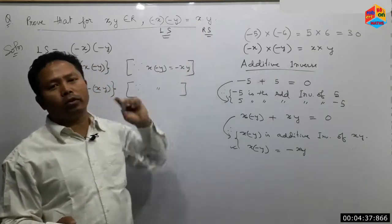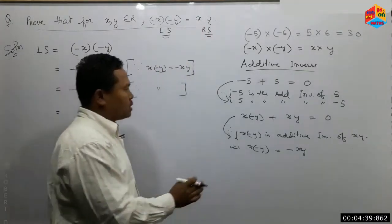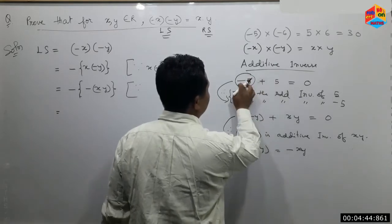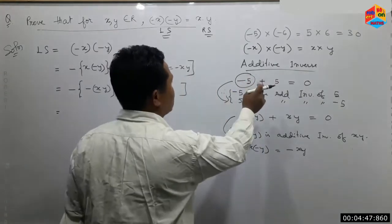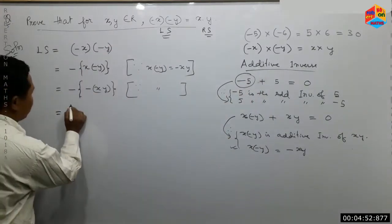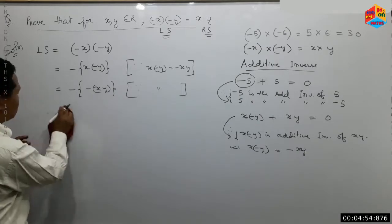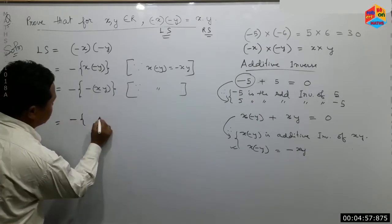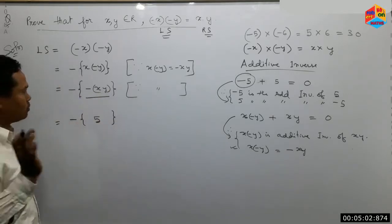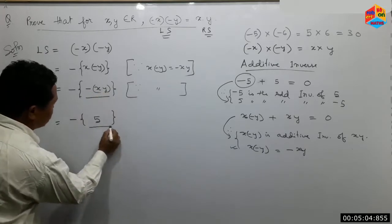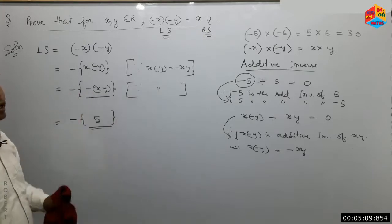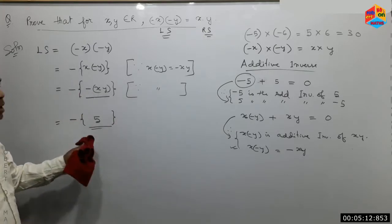The additive inverse of 5 — minus 5 is the additive inverse of 5. This bracket is minus 5 to 9. Minus 5 is the additive inverse of 5.